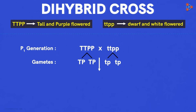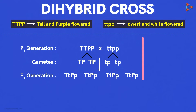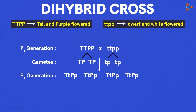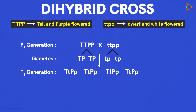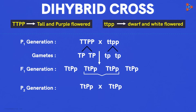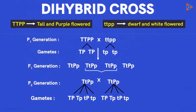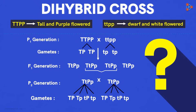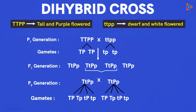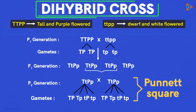Now we are ready for the crossing. This is how the F1 generation would look. Now, to get a conclusive result, we need to cross the offspring from the F1 generation to get the F2 generation. The gametes can be formed in four different combinations for each case. Will it be easy to do the crossing here? Definitely not! That is the reason why we opt for Punnett Square for a dihybrid cross.